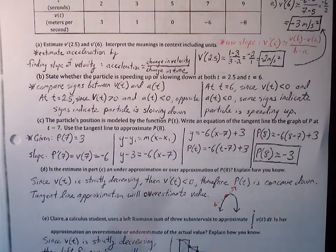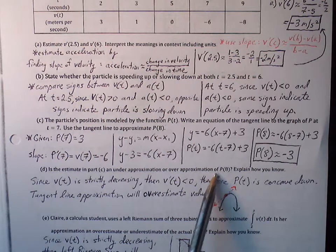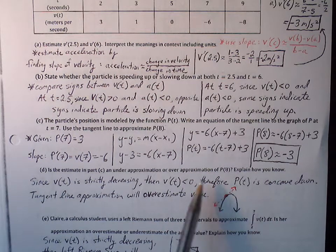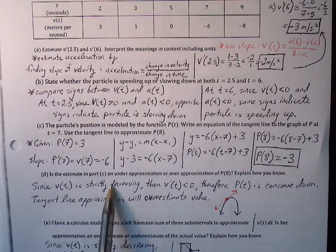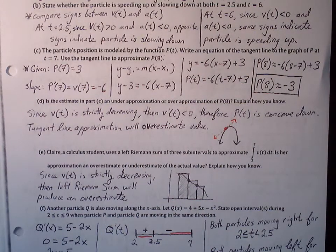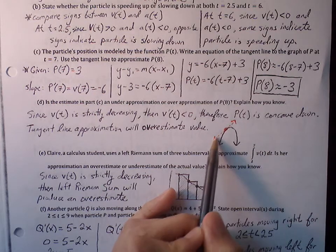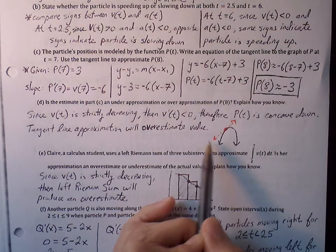Part D: is the estimate from part C an under or over approximation for p of 8? We determine this by looking at whether the graph is concave up or concave down. Since velocity is strictly decreasing, v prime of t must be less than 0. If v prime of t is less than 0, we're dealing with a concave down graph. For a concave down graph, the linear tangent line always sits above the curve, so the tangent line approximation gives an overestimation.